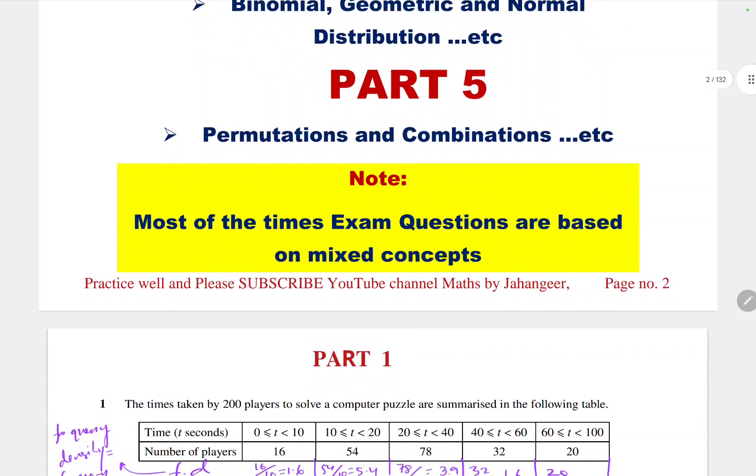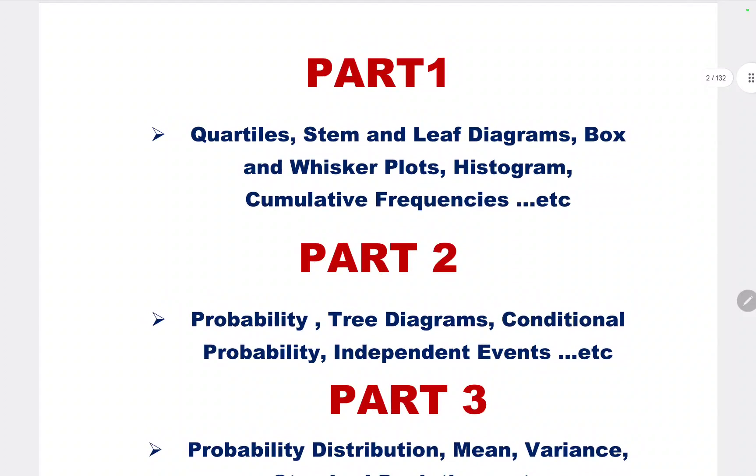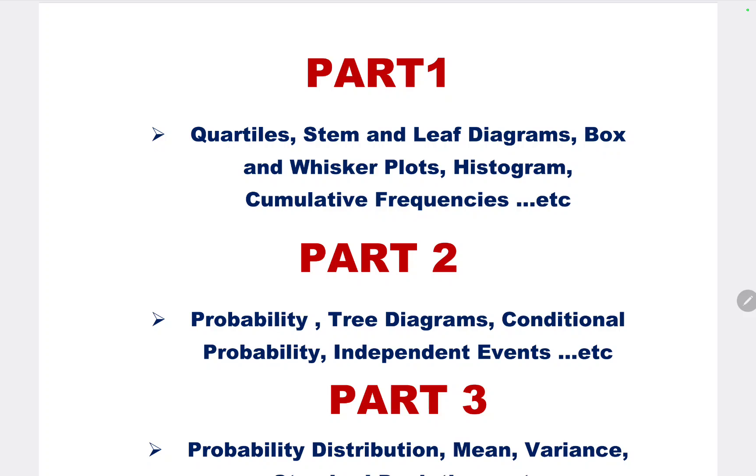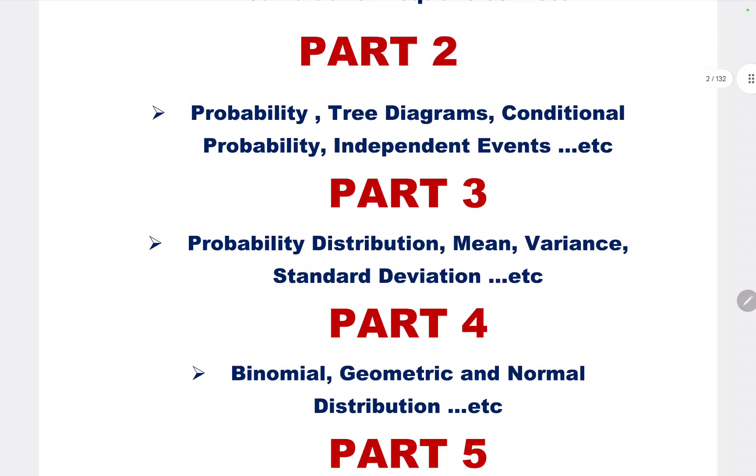Then part four will be of binomial, geometric and normal distribution. Part five will be permutation and combination. I wrote all these according to the questions they're asking in the paper, but it's not the actual order. Sometimes they are asking permutation and combination as question number one, but most of the times as question six or seven.